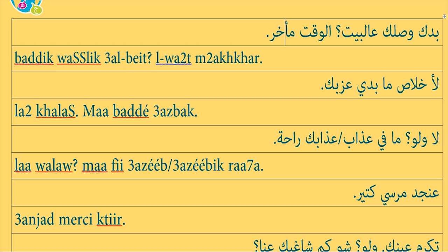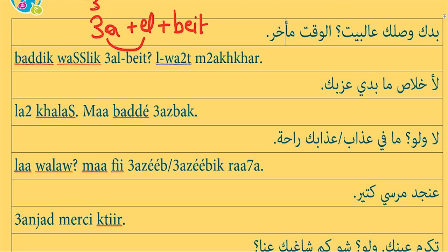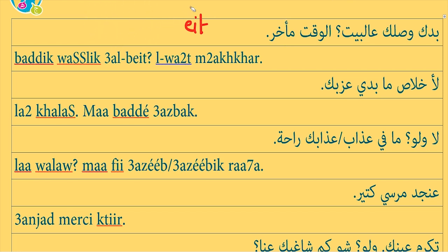بديك وصلك ع البيت. Breaking down ع البيت: ع means 'on', plus إل which means 'the', plus بيت. So ع البيت — we join them. The ع is actually an abbreviation of عالة plus L, so you can say ع البيت as well, but abbreviated it's ع البيت. In Arabic you say 'to the house', which means home.